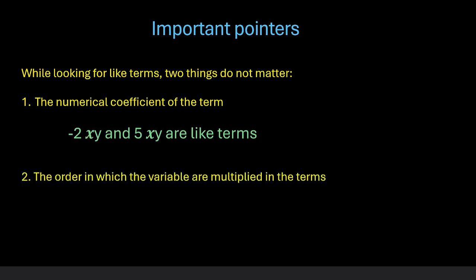The second thing is the order in which the variables are multiplied. For example, 2xyz, 9zxy and 3yxz, these are like terms.